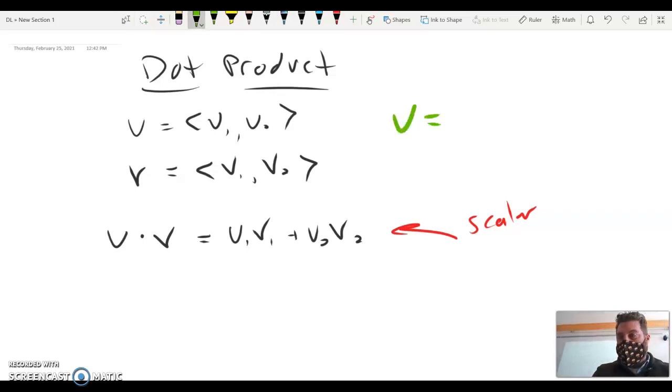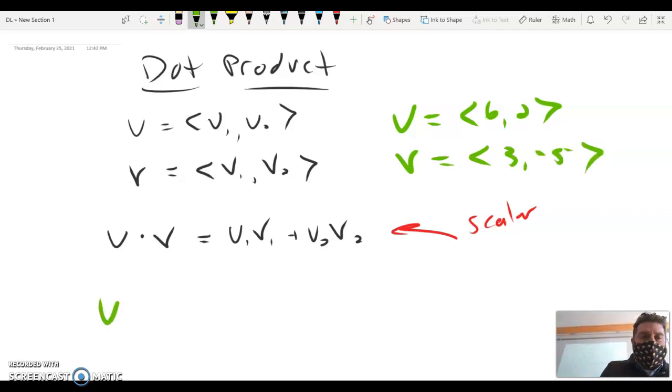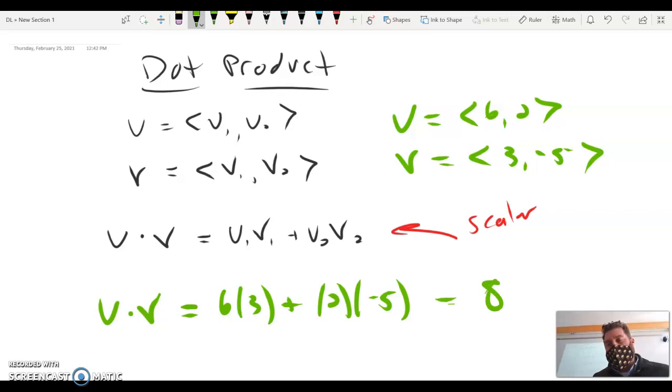So let's assume u is the vector 6, 2. And let's assume v is another vector. And we're going to call that vector 3, negative 5. So if I take the dot product of u and v, it's nothing more, nothing less than 6 times 3 plus 2 times negative 5, which is 18 minus 10, which is 8. Of course, that 8 is a number, and in the vector world we call those numbers scalars. We have scalars, numbers, and vectors, creatures with magnitudes and directions.